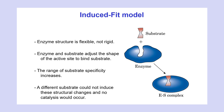The other model for the formation of the ES complex is the induced fit model. In the induced fit model, the enzyme structure is flexible, not rigid. There is an interaction between both the enzyme and the substrate. The active site adjusts to fit the shape of the substrate more closely. At the same time, the substrate adjusts its shape to better adapt to the geometry of the active site. As a result, the reacting section of the substrate becomes aligned exactly with the groups in the active site that catalyze the reaction, and they form the complete ES complex. A different substrate could not induce these structural changes, and no catalysis would occur.